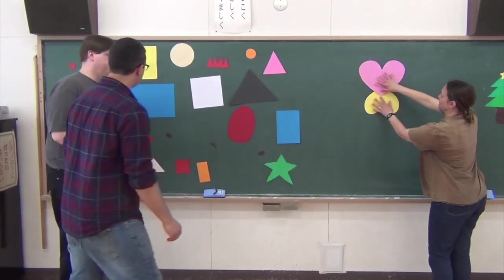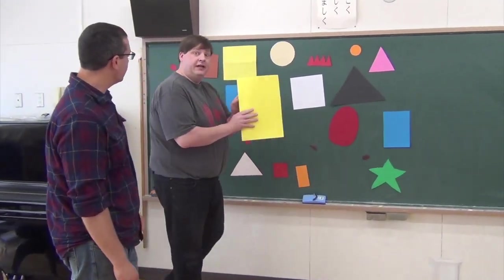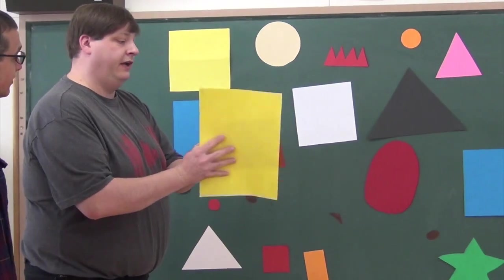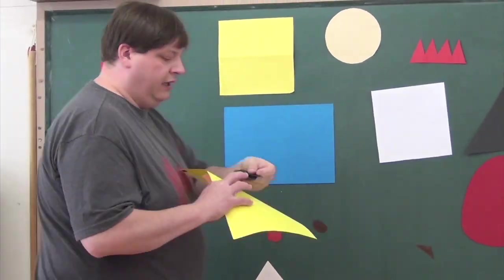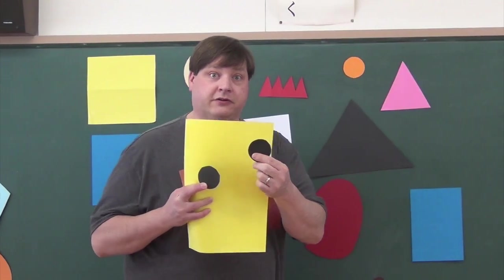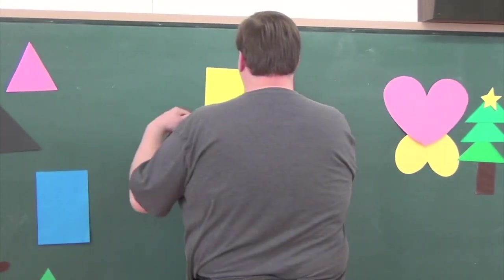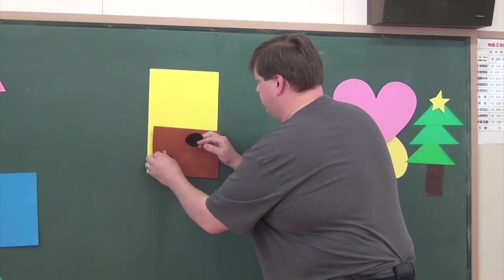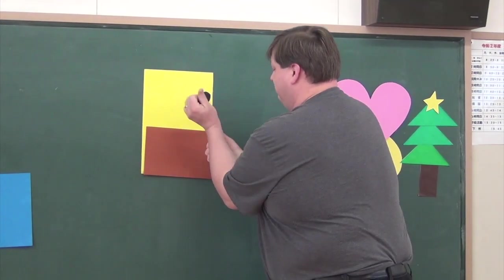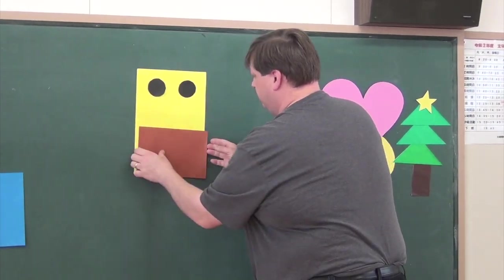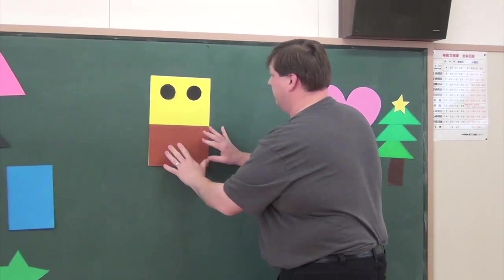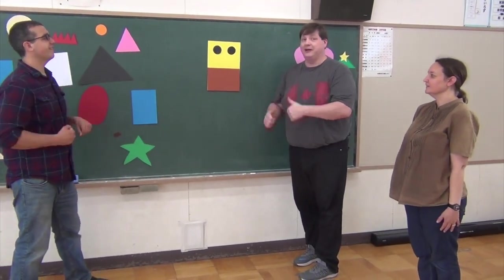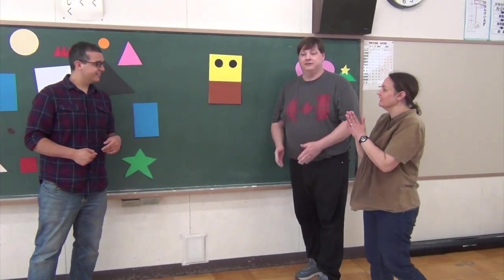What can you make? A yellow rectangle, a brown rectangle, and two black circles. Oh, I know. It's SpongeBob SquarePants. Yes, SpongeBob. Yes. Good job. Yeah. Good job.